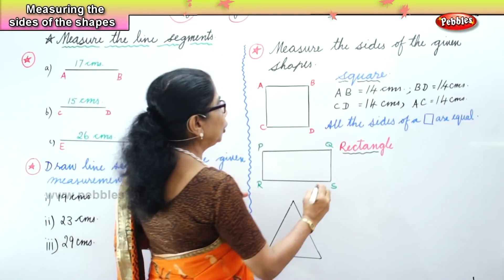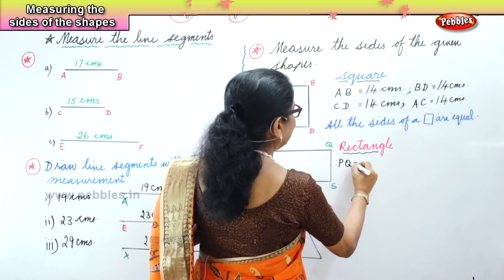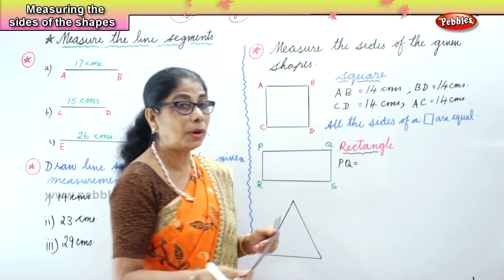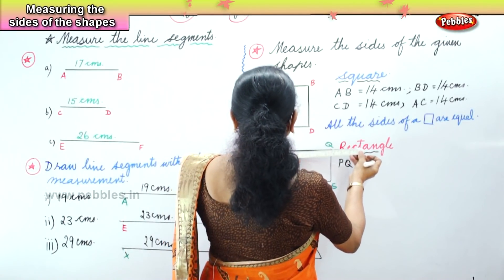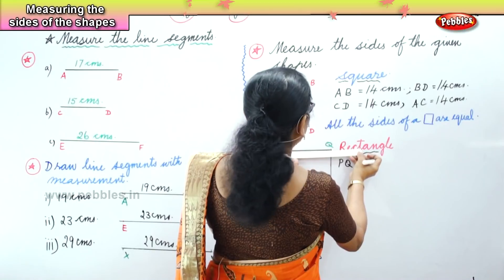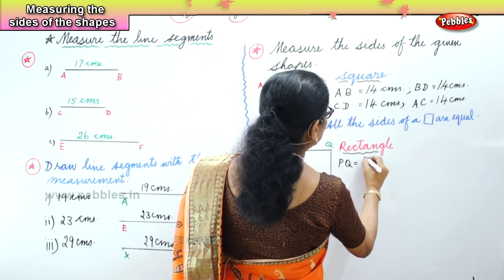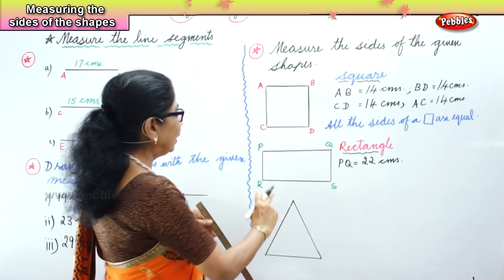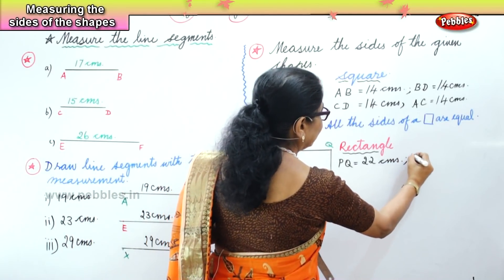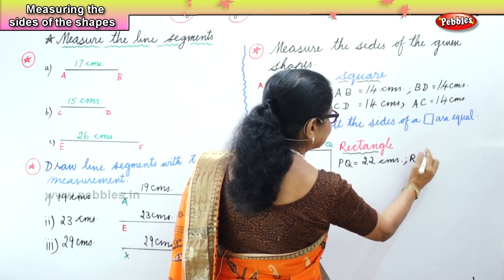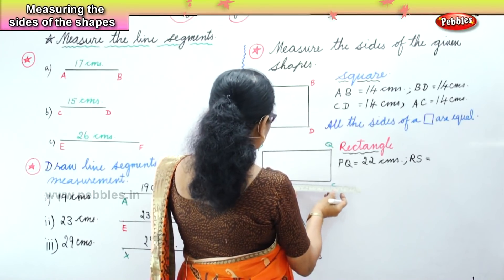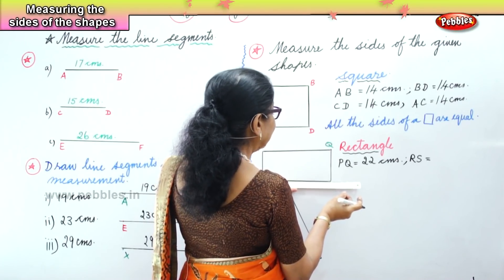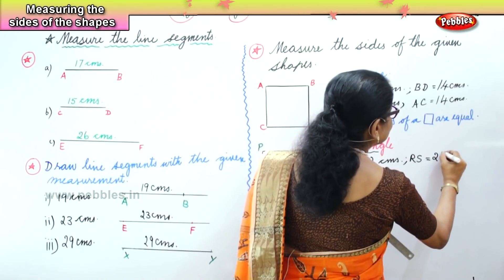Let's look at the line segment PQ. We are going to measure the line segment PQ in the rectangle. Take your ruler, put the zero on point P and then look at Q — it is 22 centimeters. Now let's measure RS. We put the ruler zero on R and look at S — it is 22 centimeters.